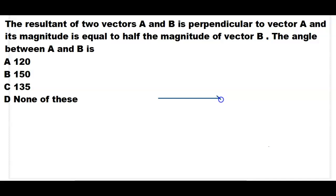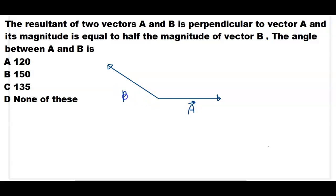Consider that vector A is acting in the horizontal direction and vector B is making an angle of theta with vector A. Here is vector A and here is vector B, and the angle between vector A and vector B is theta. Here is the angle of theta.